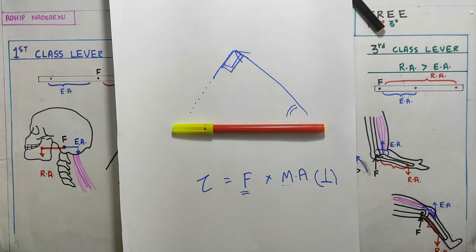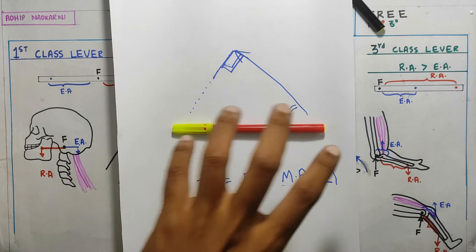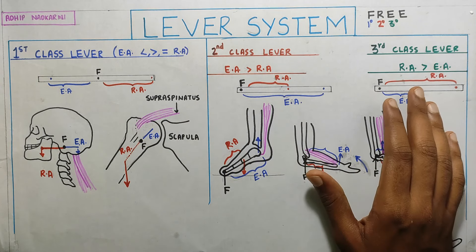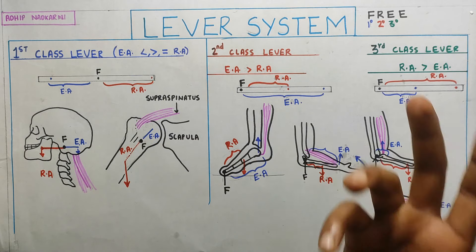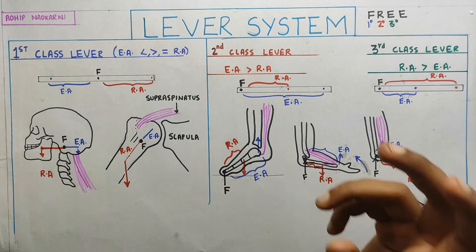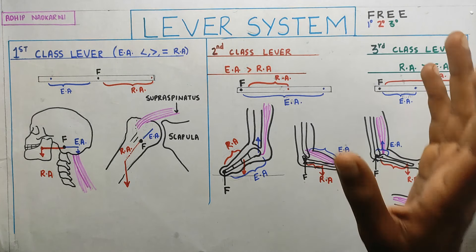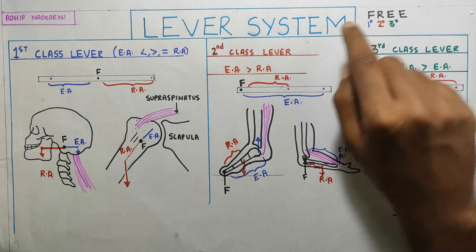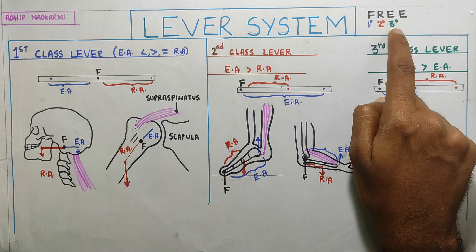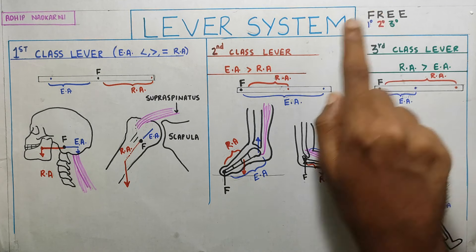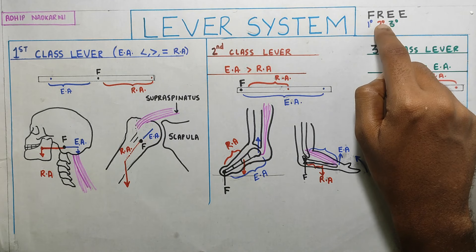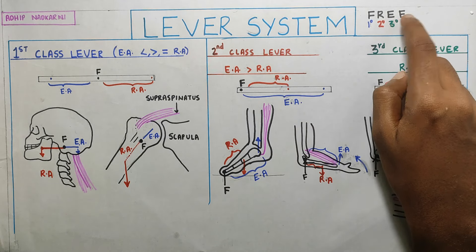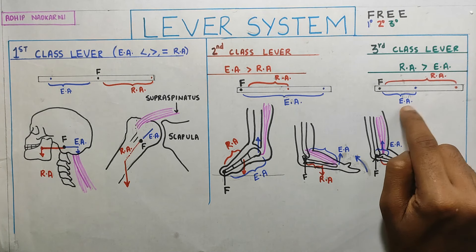Now that we understand the basic concept of moment arm, let's apply it to the lever system. There are three classes of lever — first, second and third. A simple mnemonic to remember is FREE. In the first class, the Fulcrum is in the center. In the second class, the Resistance arm is in the center. In the third class, the Effort arm is in the center.